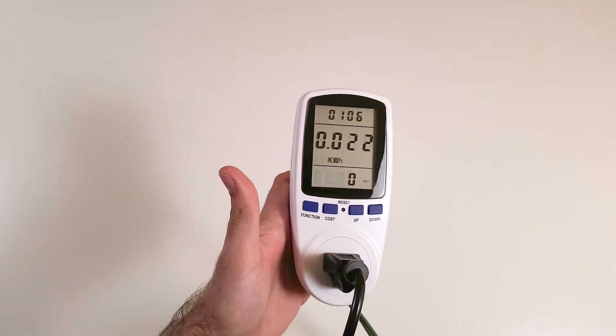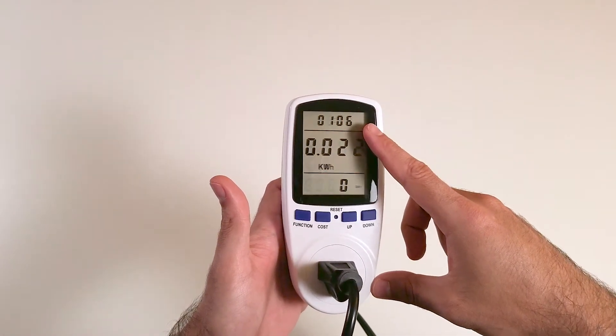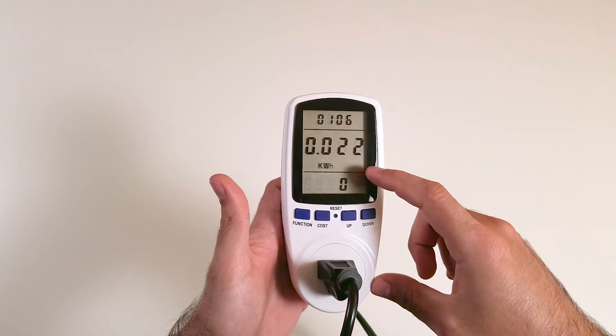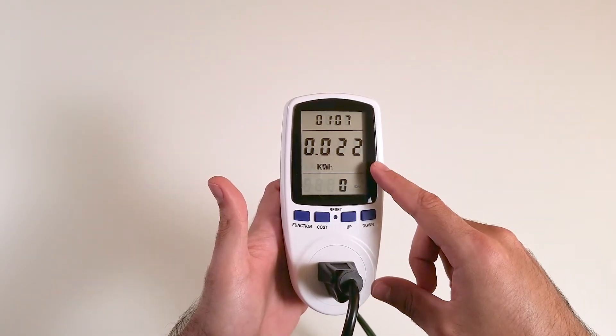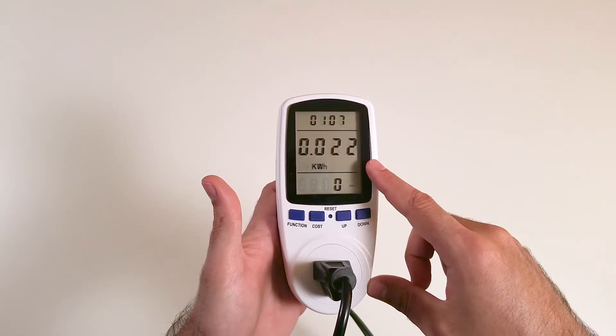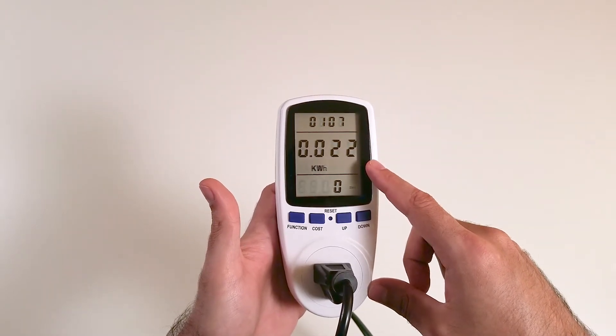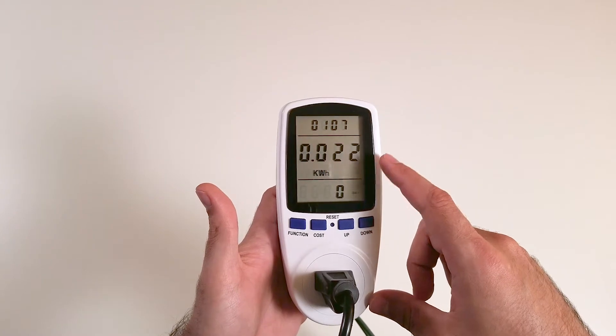Now I've plugged in one of my lights. It's been plugged for an hour and six minutes. This is how much it consumes: 0.022. With that, you can calculate how much your device consumes per hour.